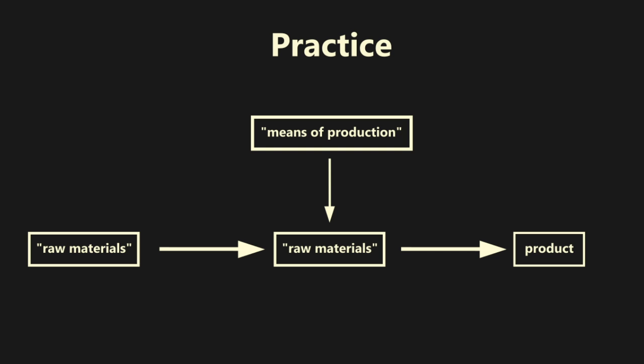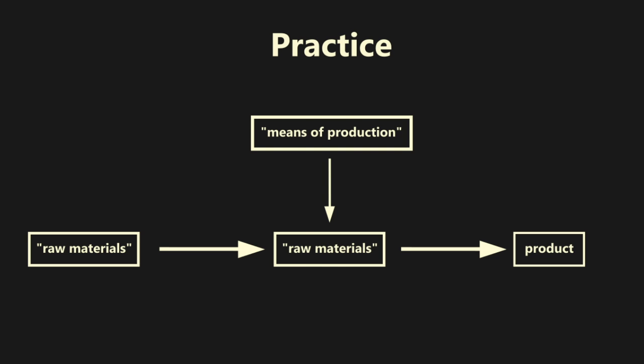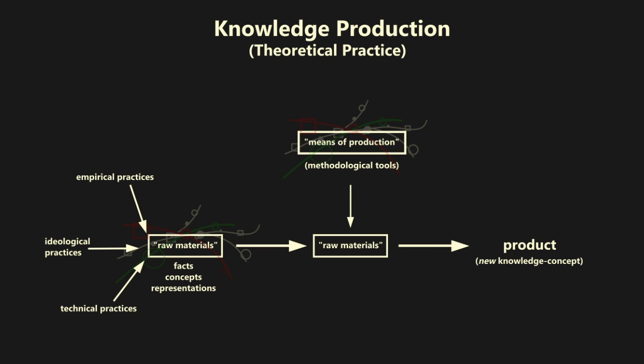This productive definition applies to theoretical practice in the same way it applies to all other forms of social practice, which constitute a complex unity of the practices existing in a determinate society. Theoretical practice, insofar as it maintains a position within social practice in general, uses representations, concepts, and facts produced by other practices, whether empirical, technical, or ideological. In this sense, theoretical practice is not strictly scientific, and can include pre-scientific elements of production.